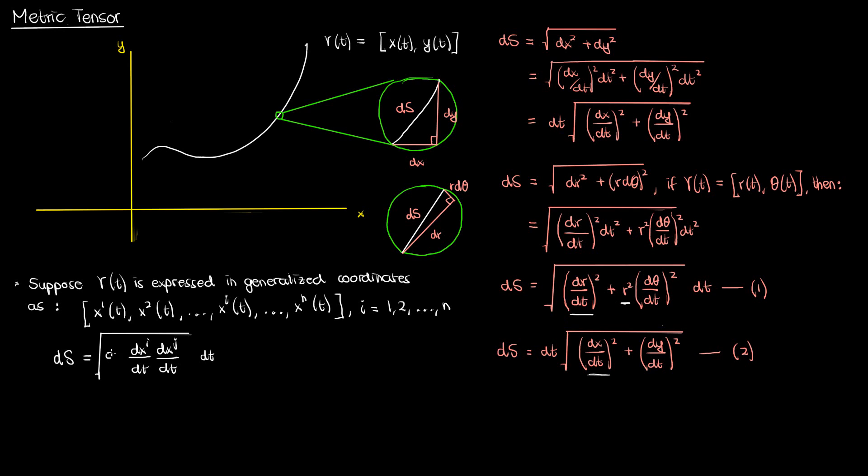This coefficient term I'm going to call g sub ij, and this g sub ij represents the components of the tensor called the metric tensor, which is what this video and the following video will be about. So at this point we have an expression for the arc length element in generalized coordinates: the square root of a sum over indices i and j of the metric tensor component g sub ij times the product of the two coordinate derivatives dx super i by dt and dx super j by dt. This expression is a sum over both indices because, as discussed in our video on Einstein notation, if an index is repeated twice in a single term, that index is summed over — and i and j are each repeated twice here.